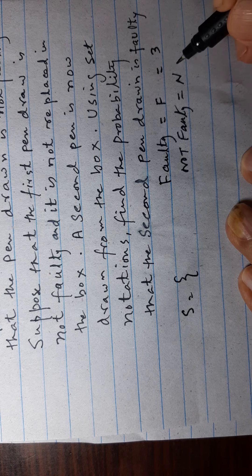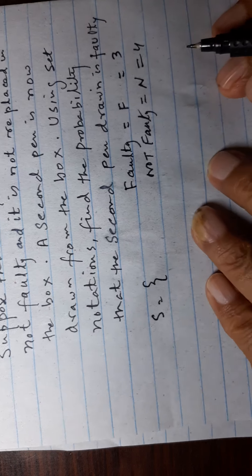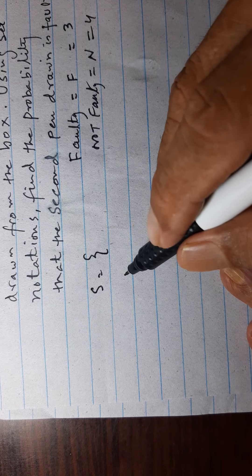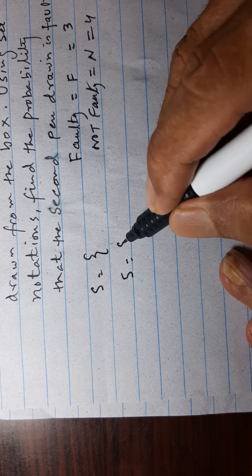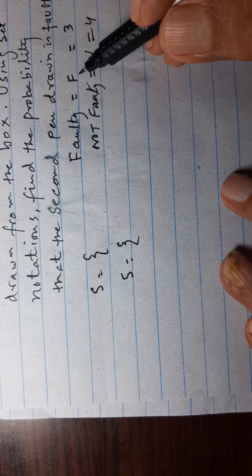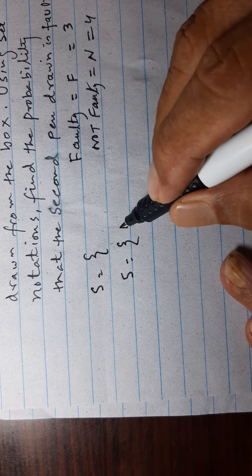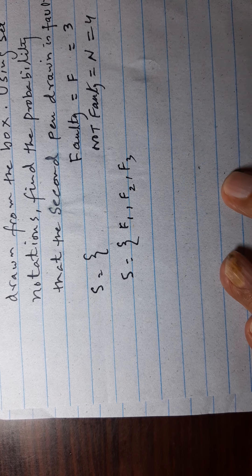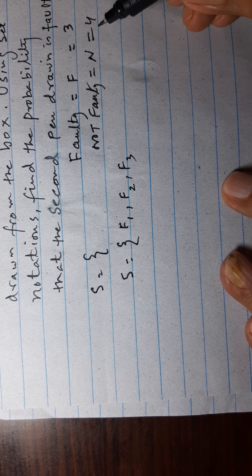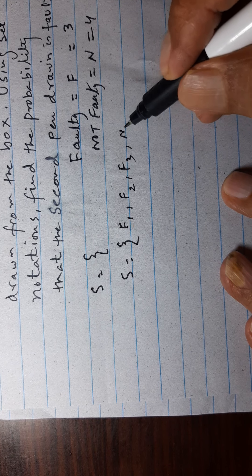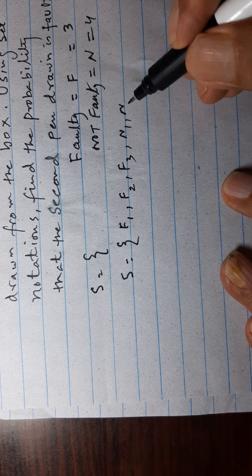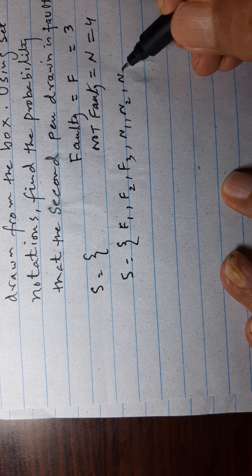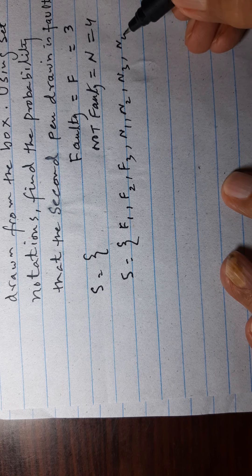Now the sample space will be in set notation. Faulty is three, so we can write F1, F2, and F3. Not faulty is four: N1, N2, N3, and N4.